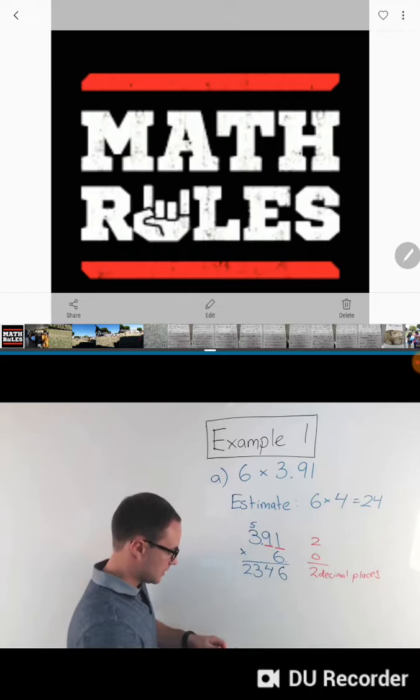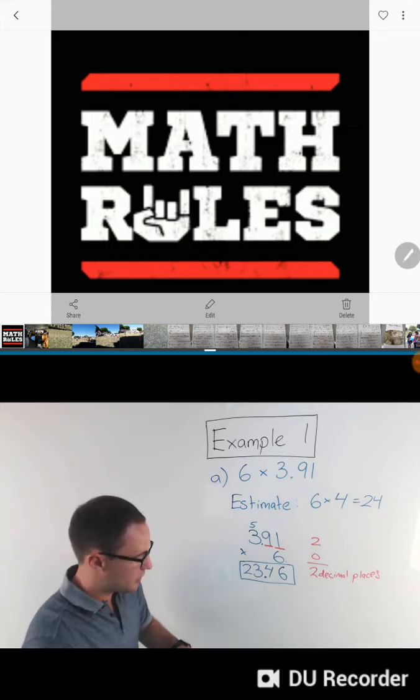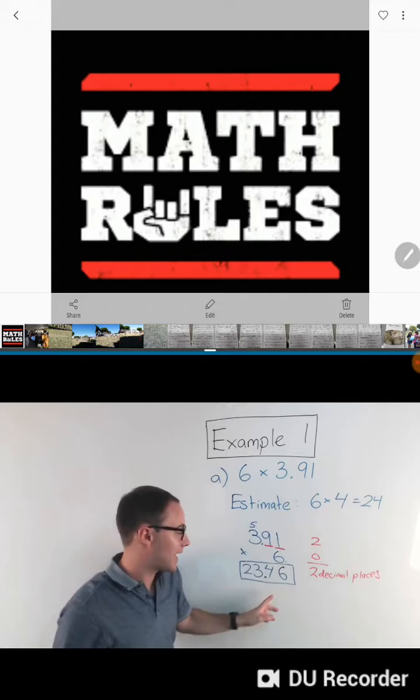In our answer, we need two decimal places. One, two. The decimal point goes there, and that is our product, that's our answer: 23.46. Let's check: does that make sense with our estimate? Yeah, it's really close, so we know we're good.